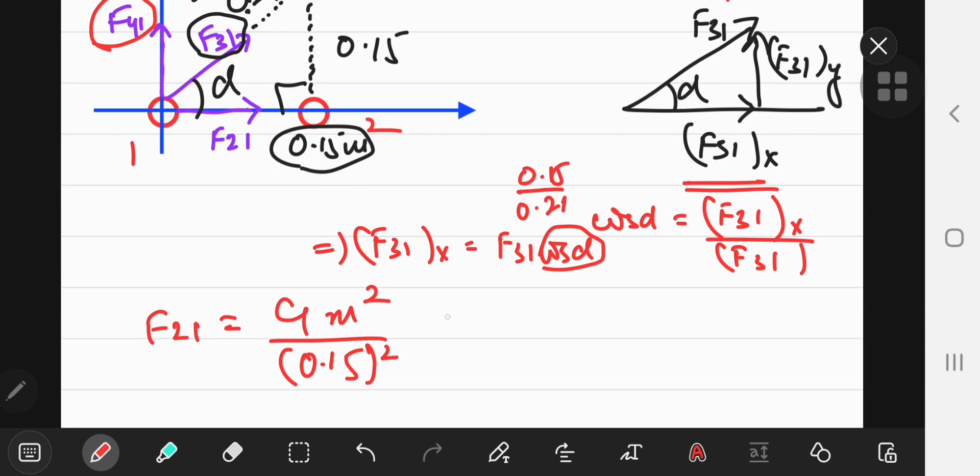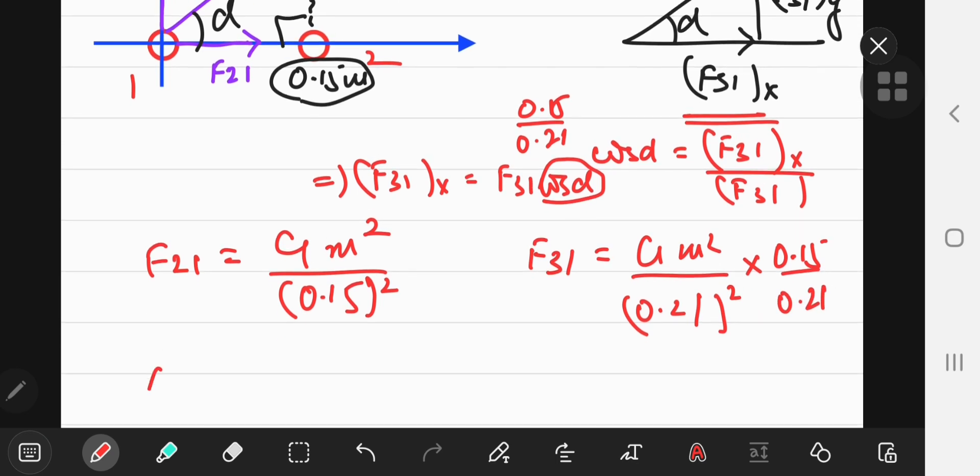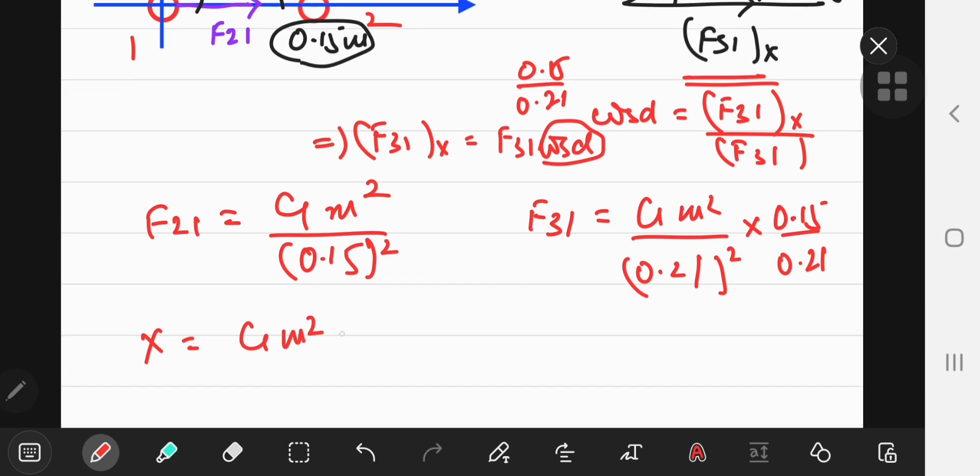And F sub 3, 1 equaled, again, gm squared divided by 0.21 squared times that 0.15 by 0.21 factor. So I can actually factor out gm squared and then just add up the other terms left.